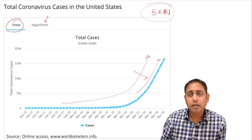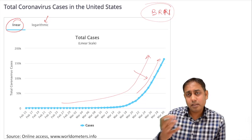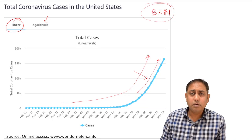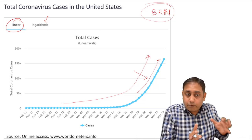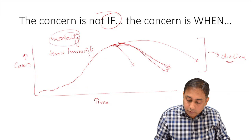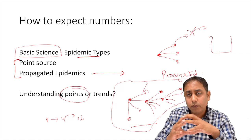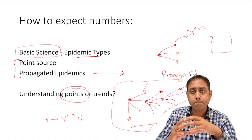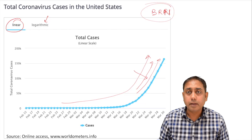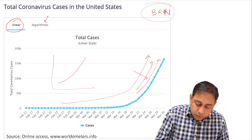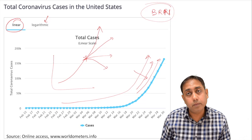That is where the number called the basic reproduction number comes in. The basic reproduction number was estimated — it's a mathematical term — to be around 2.5 to 3.5, though it will keep changing based on the total quantum of population spreading the disease. The linear curve tells you about the quantum of population going to spread the disease, but it doesn't tell you whether cases will keep rising or start declining.